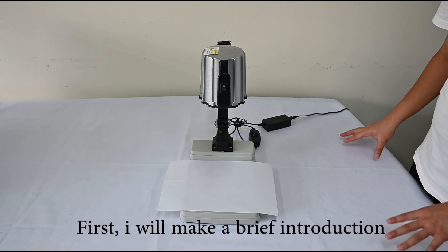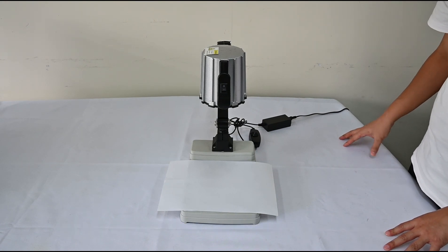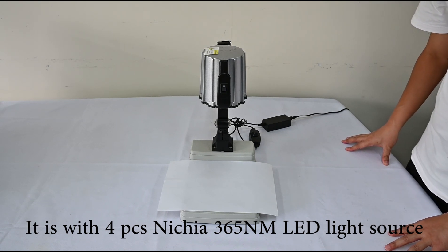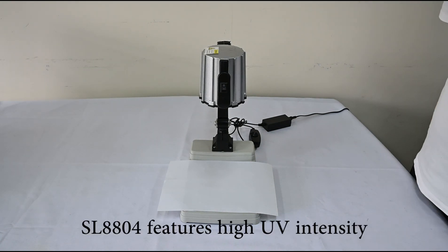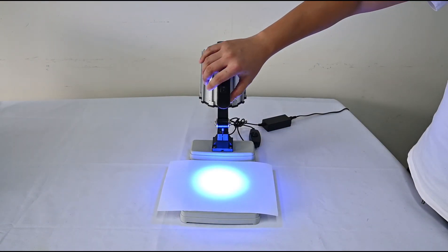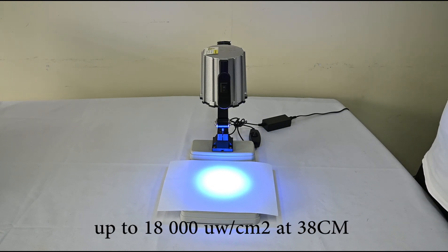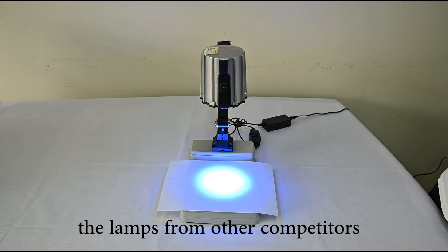First, I will make a brief introduction about the SLW804 excitation light source. It is with 4-piece Nichia 365nm LED light source. SLW804 features high UV intensity. The UV intensity of SLW804 could be up to 18,000 mW per square cm at 38 cm, which is much stronger than the lamps from other competitors.